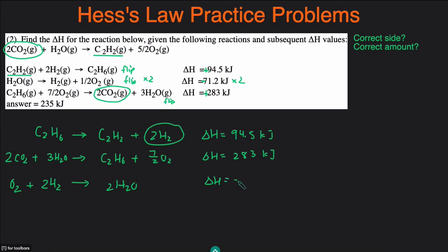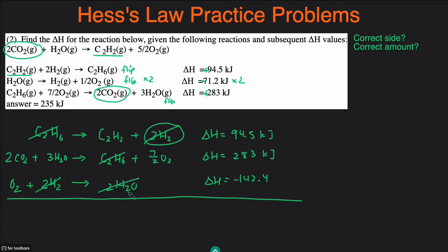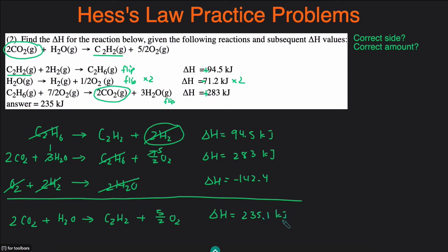Now let's cancel out species. The 2H2 cancels out. C2H6 cancels out. Two of the H2O's cancel out, leaving one H2O. Then we have 1 O2 and 3.5 O2, so subtracting 1 O2 from both sides leaves 5 over 2 O2. Bringing what's left down gives: 2CO2 plus H2O forms C2H2 plus 5 over 2 O2. Then adding the delta H's: 94.5 plus 283 minus 142.4 gives 235.1 kilojoules. And that matches the answer.